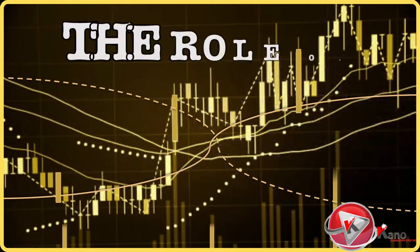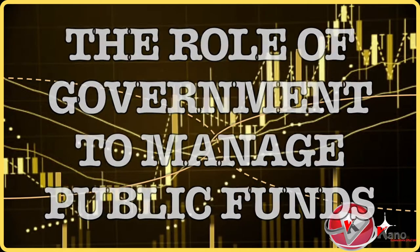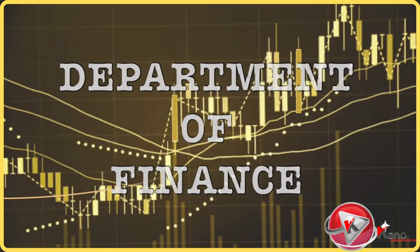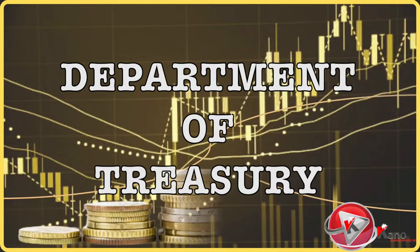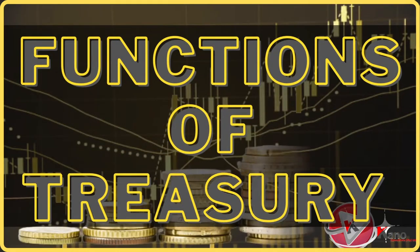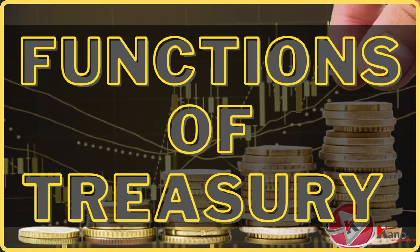One of the roles of government is to ensure the proper management of public funds. This includes the efficient implementation of the country's budgets and good management of financial resources. This role is usually performed by the country's finance department or the Department of Treasury. The main function of the Department of Treasury is to manage the government finances by operating and maintaining regulations, policies, and systems that are critical to the financial infrastructure of the country, state, province, or municipality.